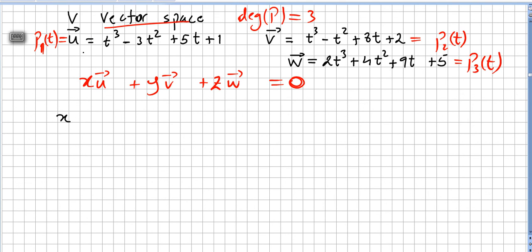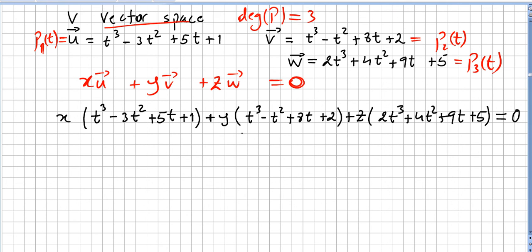So x times this one, t^3 minus 3t^2 plus 5t plus 1, plus y times t^3 minus t^2 plus 8t plus 2, plus z times 2t^3 plus 4t^2 plus 9t plus 5 equals 0.